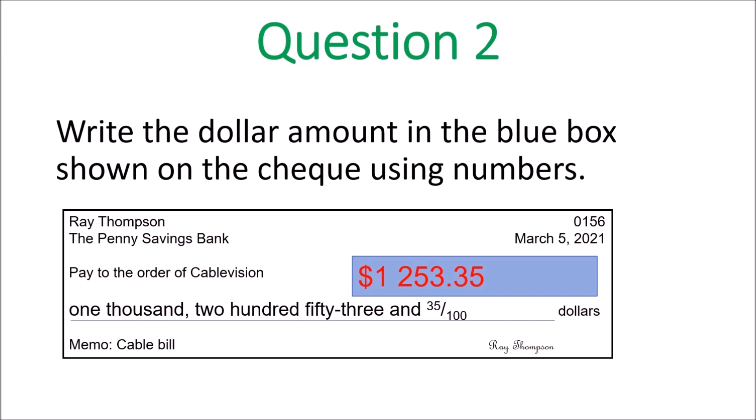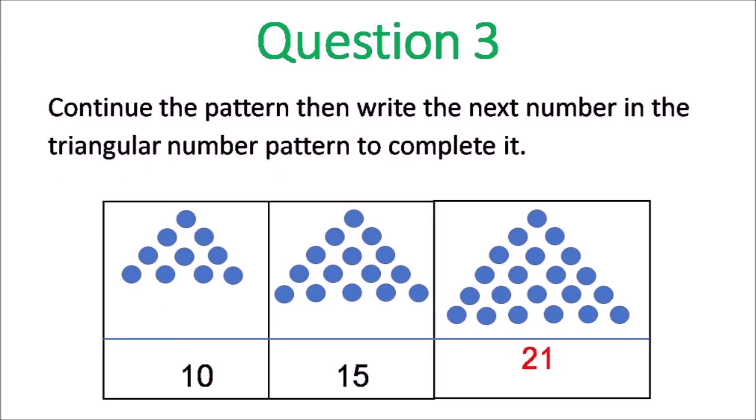Look at it in words and then write it in numbers — that decimal number is shown there. Question 3: continue the pattern. These are triangular numbers. You add a row with six at the bottom, so it's 6, 5, 4, 3, 2, 1 — add them up and you get 21. The next triangular number is 21: 10, 15, then 21.